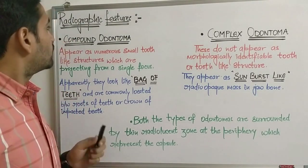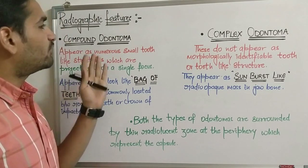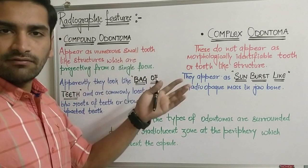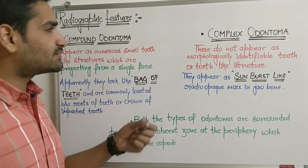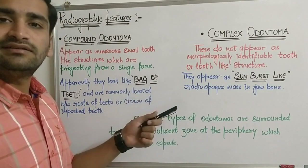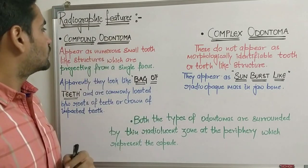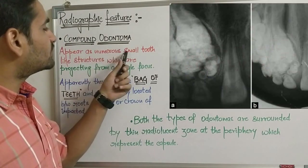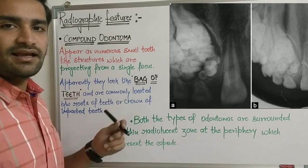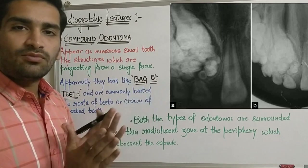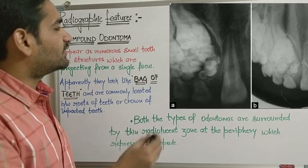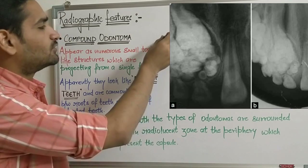Moving on to the radiographic features of odontoma: there are two types — compound and complex — each with their own peculiar radiographic appearance, which is important to remember and can be asked in one-mark questions. Compound odontoma appears as numerous small tooth-like structures projecting from a single focus — a structure that morphologically resembles a tooth, with a radio-opaque structure emerging from a single point, seen between the roots or around the crown of impacted teeth.